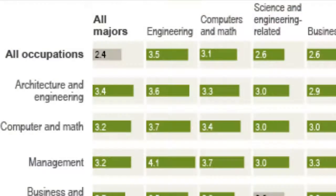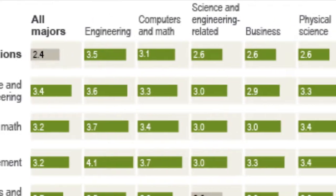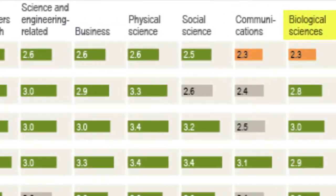In general, biological science degrees are going to be a little bit below average when you look at someone's lifetime earnings. The average for all occupations and majors is around $2.4 million earned over a lifetime. And biological science majors, which is what food science falls under, is around $2.3 million. So it's a little bit below average.